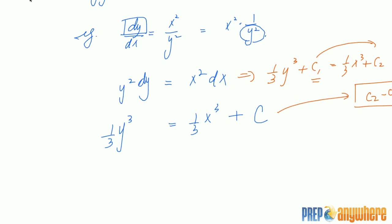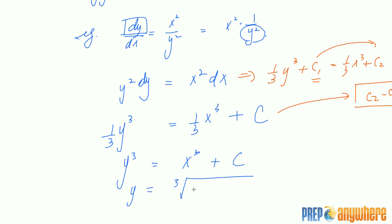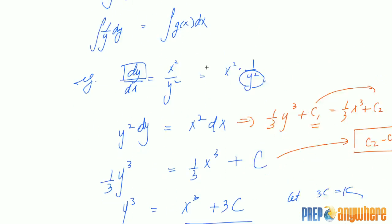Now let's isolate y. First, multiply everything by 3. Then take the cubic root of both sides. We get y equals the cubic root of x cubed plus 3c. Instead of writing 3c, we let 3c equal k and replace it with k. That equation will satisfy the original differential equation.